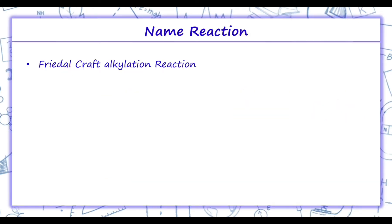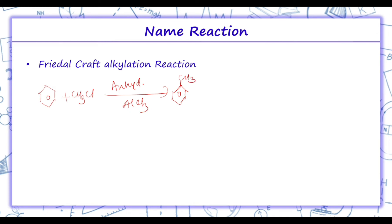The first name reaction is Friedel-Crafts alkylation. Benzene when treated with alkyl halide, that is CH3Cl, in presence of anhydrous aluminium chloride, we get toluene. Here H and Cl are removed. Similarly, benzene with ethyl chloride in presence of anhydrous AlCl3 gives ethylbenzene.